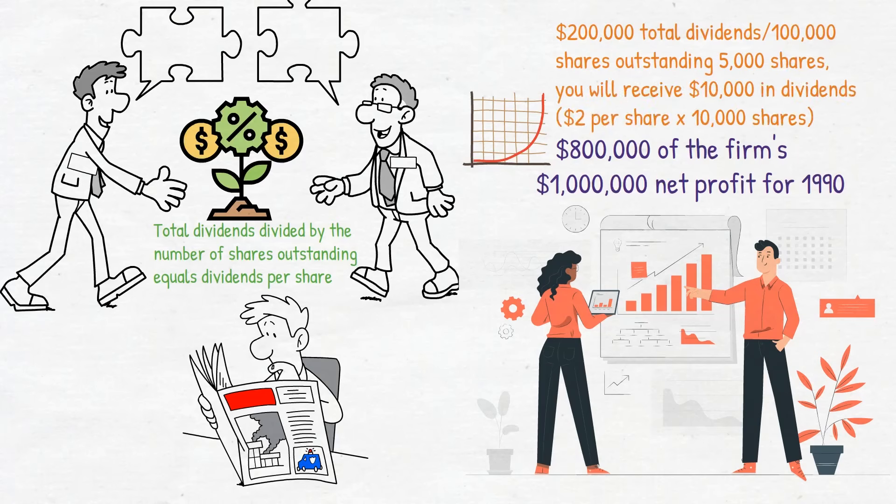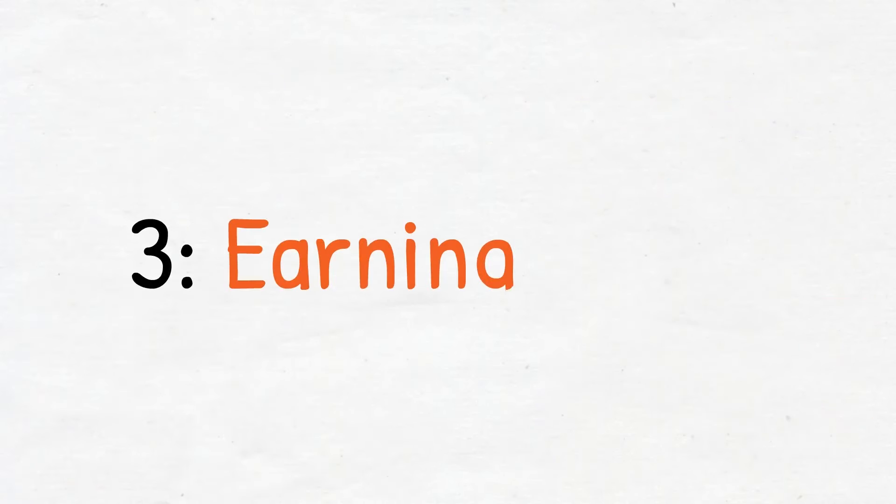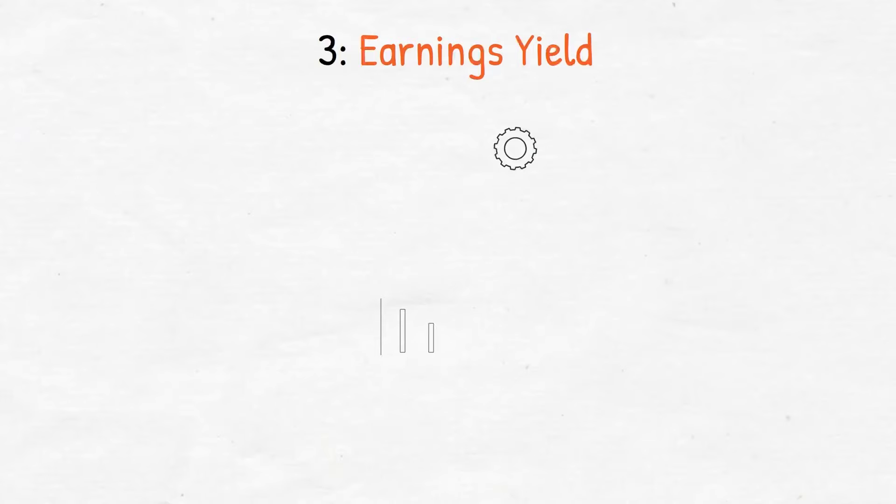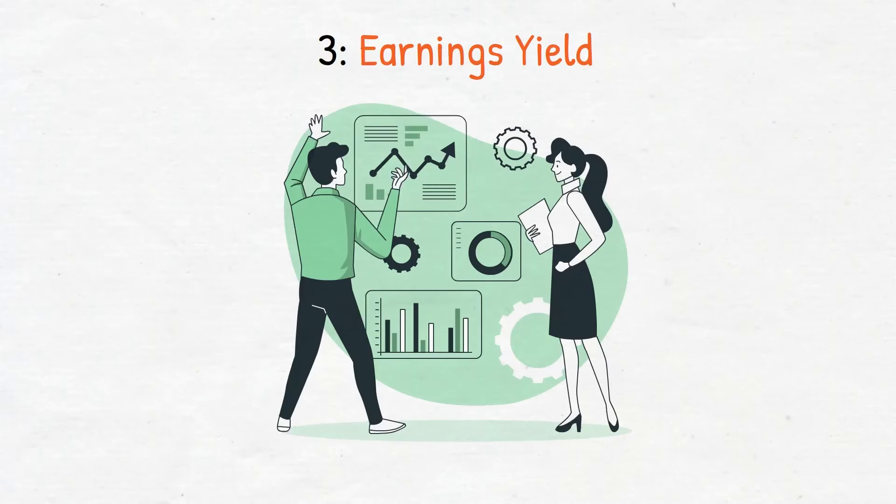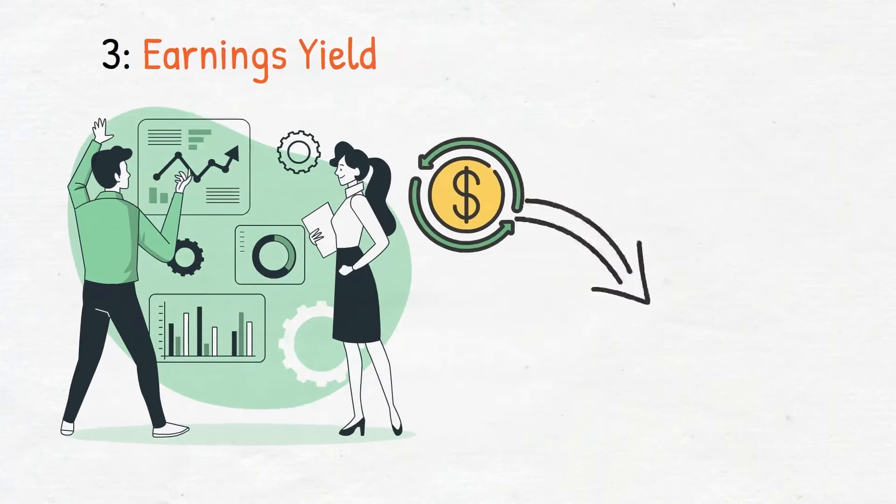Number three: earnings yield. Even though the stockholder receives only that part of the firm's earnings directly which is paid as dividends, the portion retained for reinvestment should produce a net benefit for the stockholder when this stock is sold. This means of evaluating stock provides a measure of the rate of return on the stock.